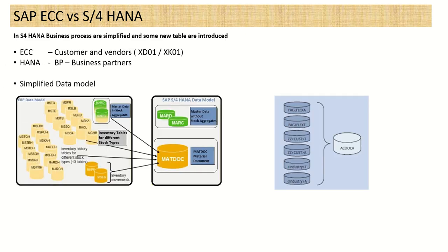The next change is at the simplified data model. SAP introduced some new tables — for example, in the MM area and in the Finance side, ACDOCA was introduced. In the Sales area as well, some tables have been changed, such as the pricing table, which has been modified.